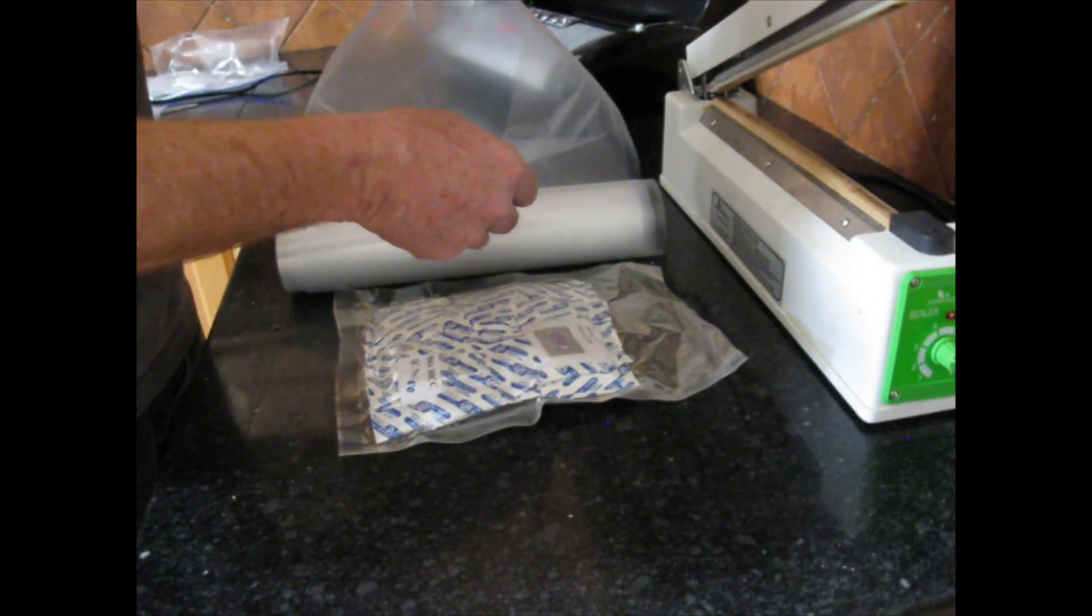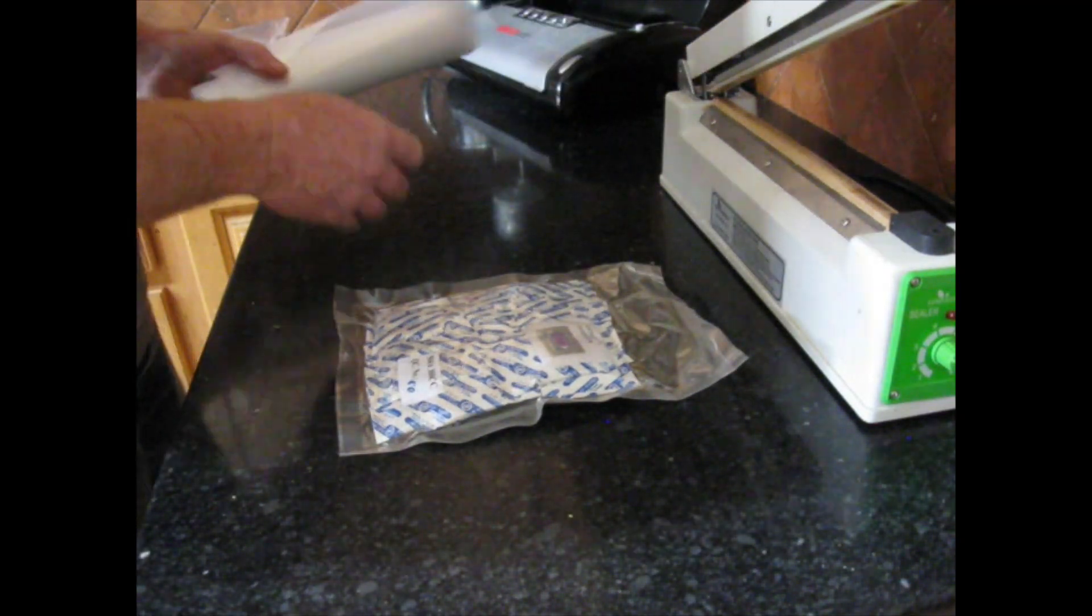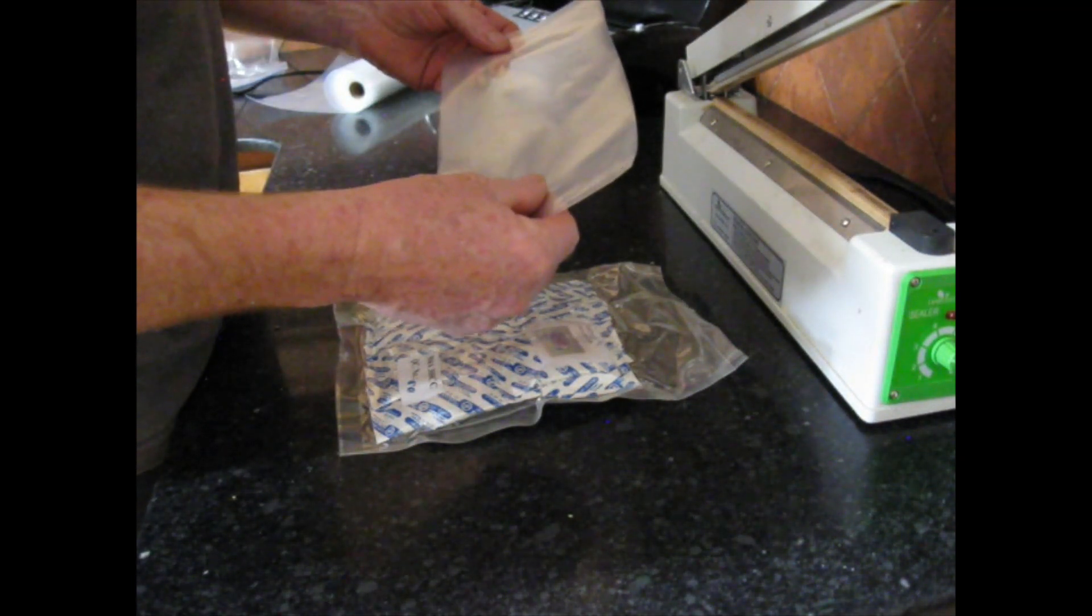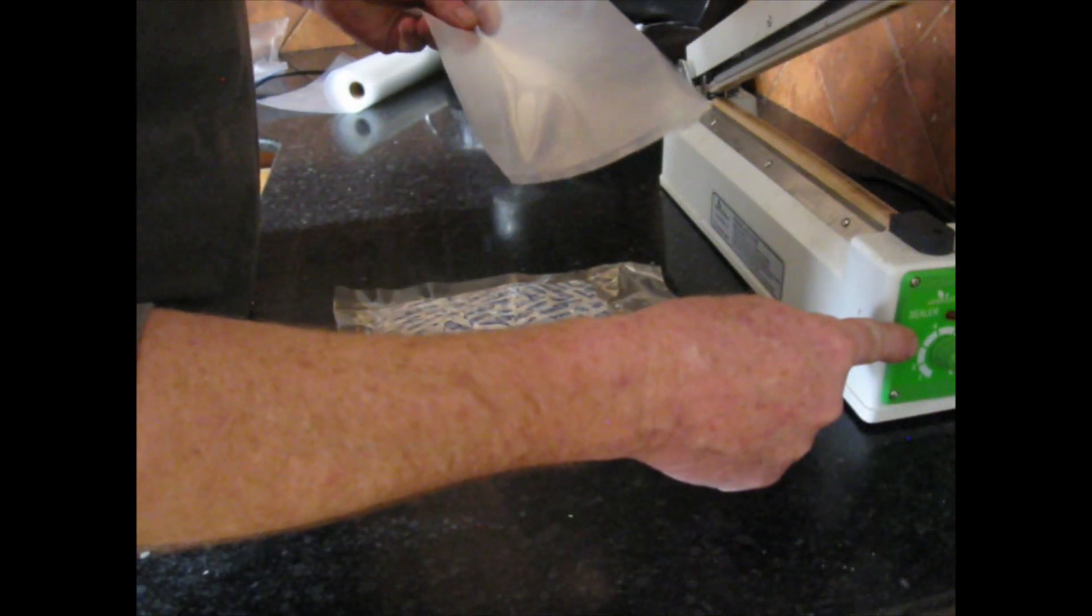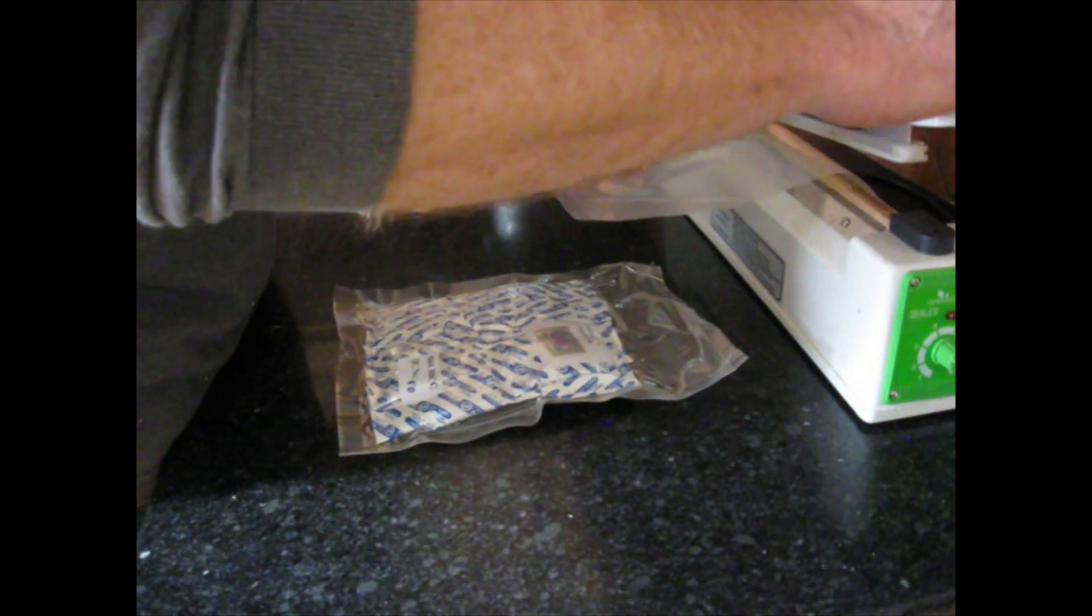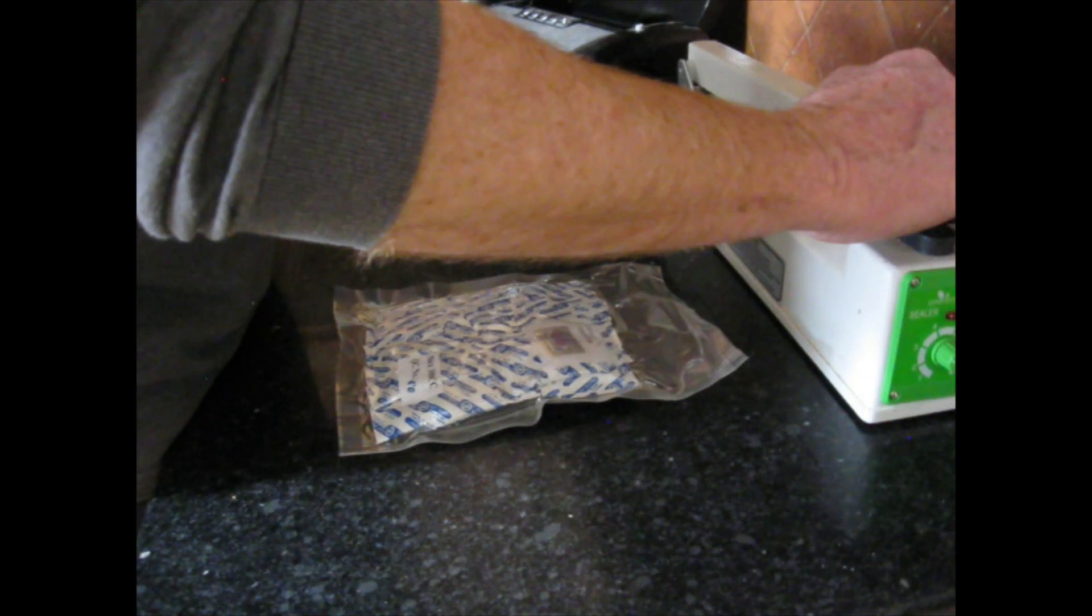They're open at one end. And so what I do, I just take that material, I cut off a piece like this. I have my sealer on a number three. And what I will do, I will just make my own little envelopes.